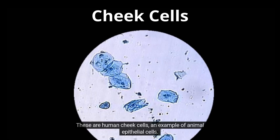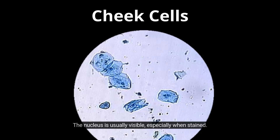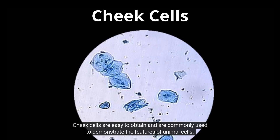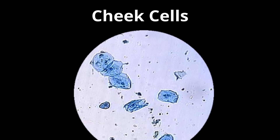These are human cheek cells, an example of animal epithelial cells. Unlike plant cells, there is no cell wall, so the cells appear rounded and irregular in shape. The nucleus is usually visible, especially when stained. Cheek cells are easy to obtain and are commonly used to demonstrate the features of animal cells. This is a fun activity to do with your new microscope.